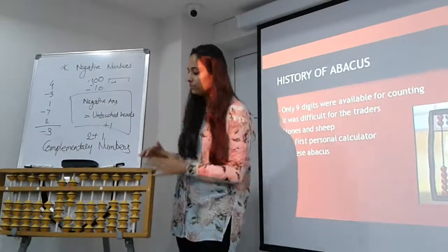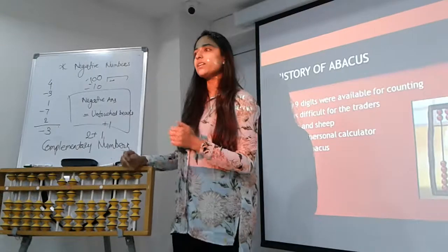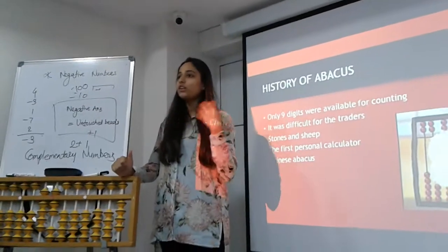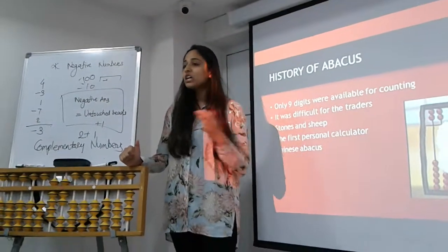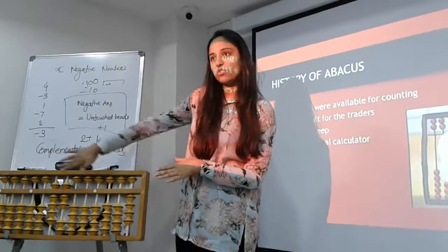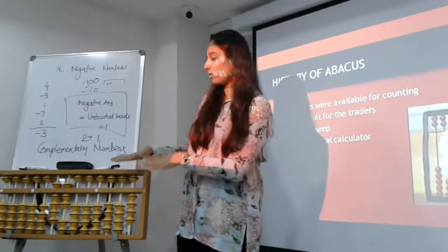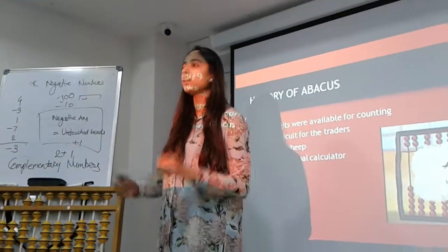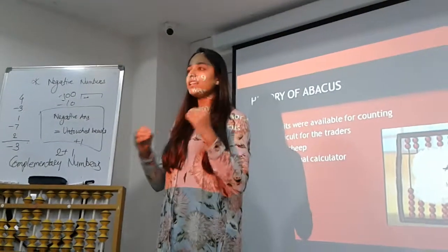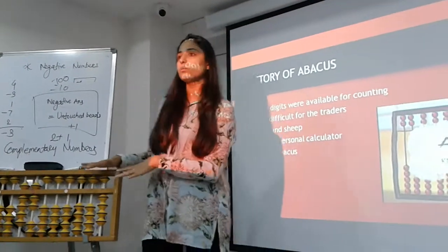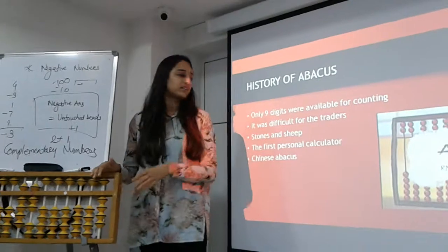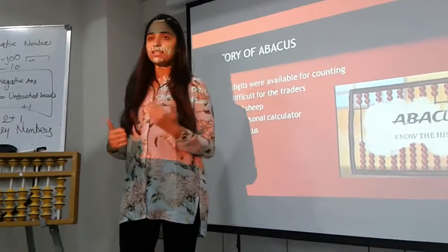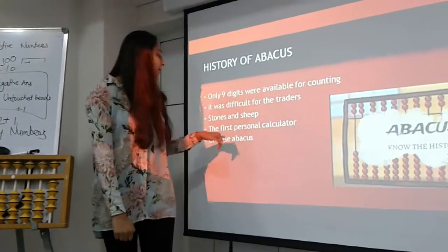After the unit point was introduced, more and more evolution took place. Initially I think there were only 11 rods available, but then our knowledge of math and digits increased. So today there are 17 rods available, and on this Abacus there is no math operation that cannot be performed. Any, any, any math calculation can be done with the help of Abacus. That is how the full evolution of Abacus has taken place.